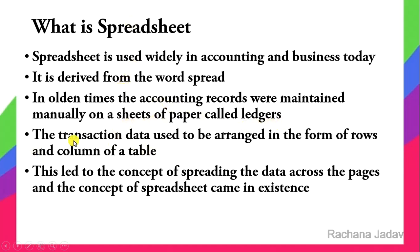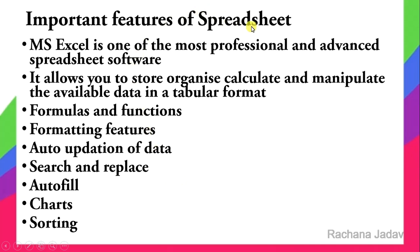The transaction of data used to be arranged in the form of rows and columns. In a table, there are rows and columns — they would write the date, then the particulars, then the amount. This was done in tabular format, which led to the concept of spreading the data across the pages, and it was given the name 'spreadsheet'.